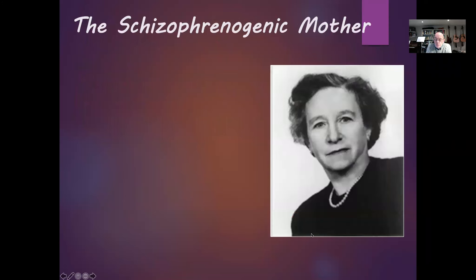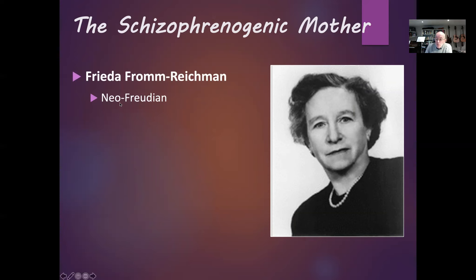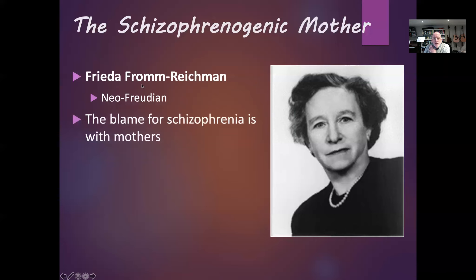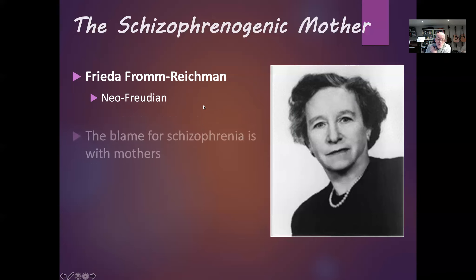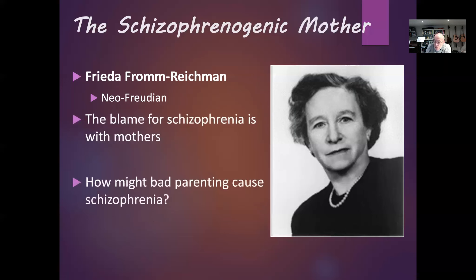Another psychodynamic explanation for schizophrenia is known as the schizophrenogenic mother — an absolutely brilliant Scrabble word. This idea was put forward by Frieda Fromm-Reichmann, who was interested in Freudian ideas but developed some of her own, making her what is known as a neo-Freudian. Her idea was that the reason — or rather the blame — for schizophrenia comes from mothers. She argued that certain types of mothers cause schizophrenia. You might want to pause and think about how bad parenting could cause schizophrenia.